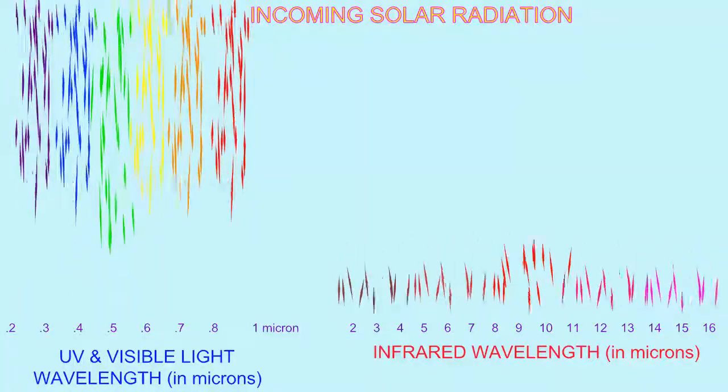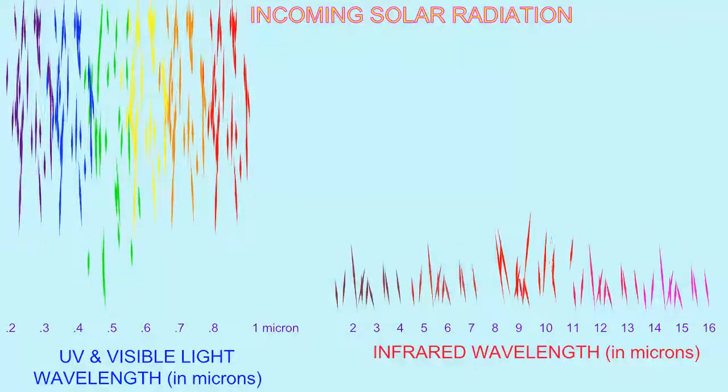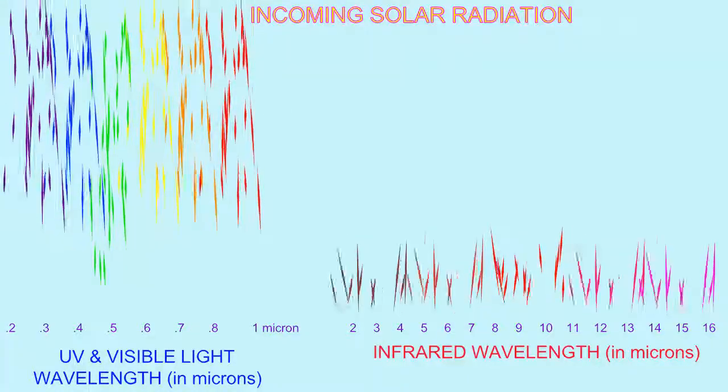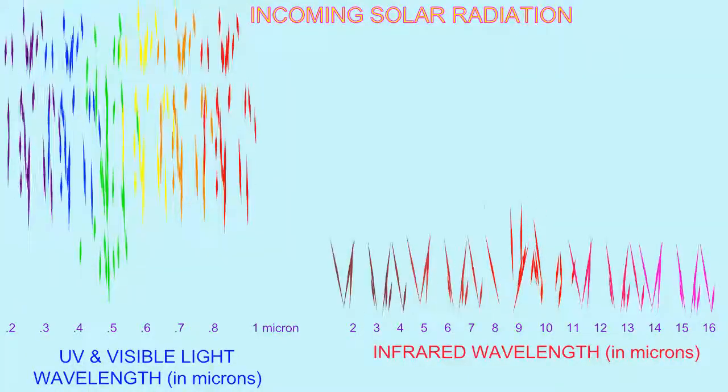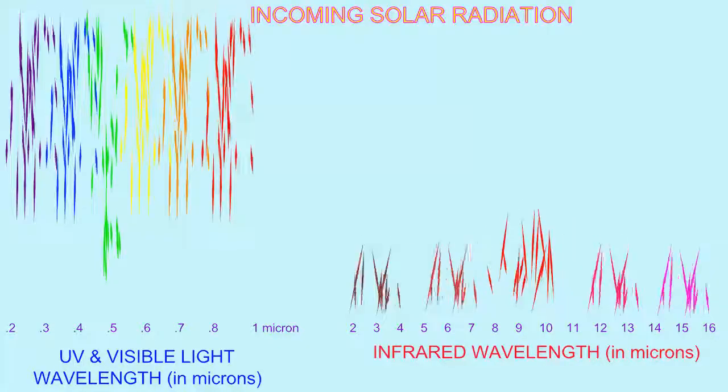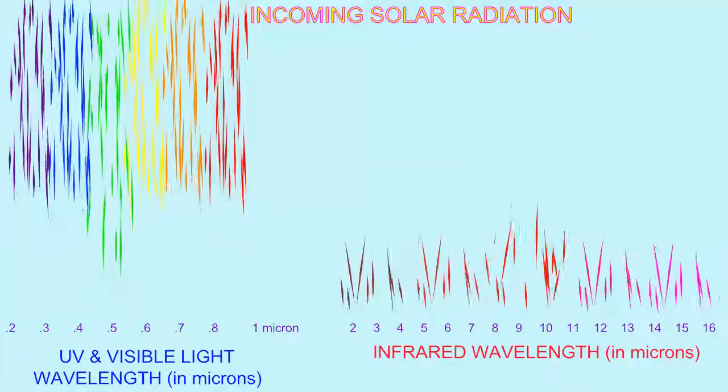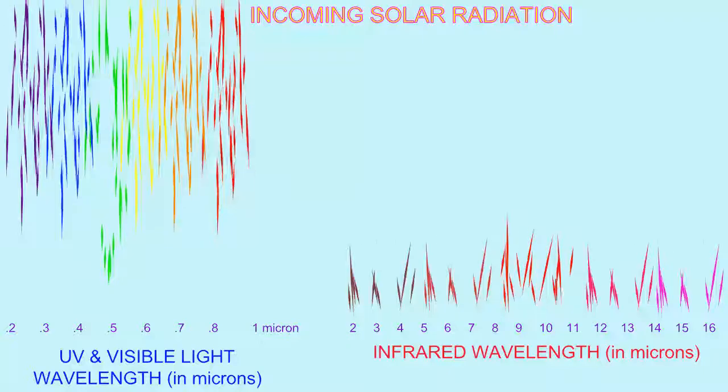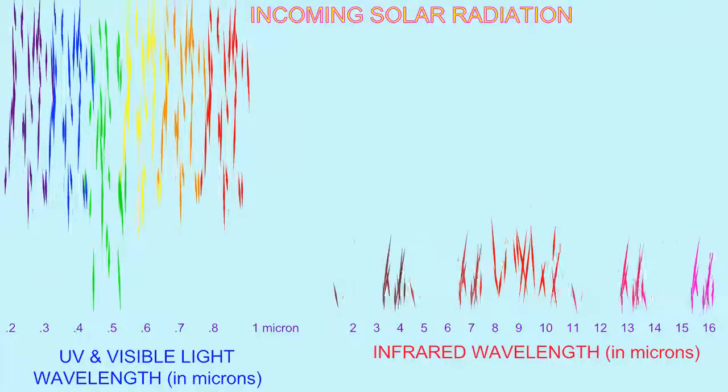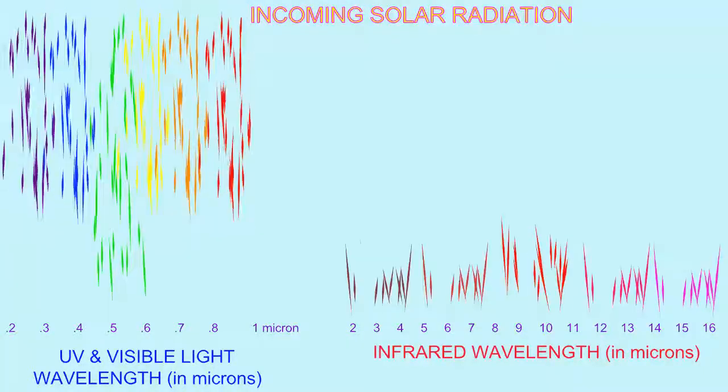The energy which leaves planet Earth and radiates back out into space is of much lower intensity, and thus is in the infrared region of the electromagnetic spectrum, with wavelengths of four to forty microns.